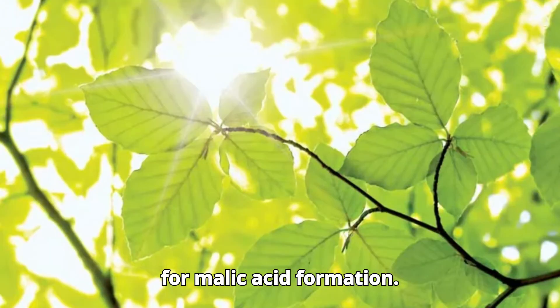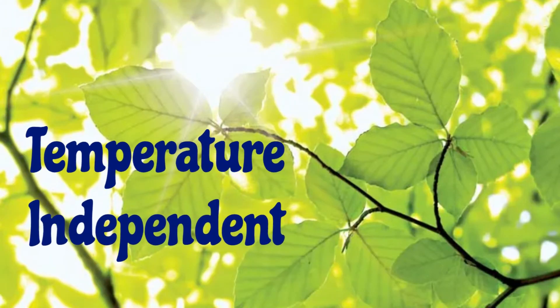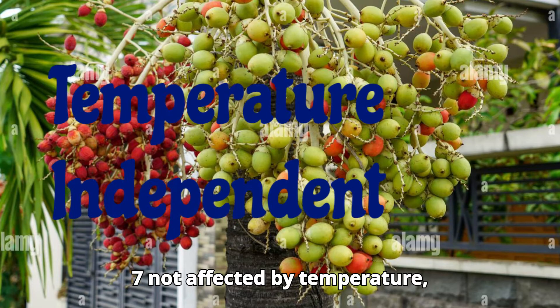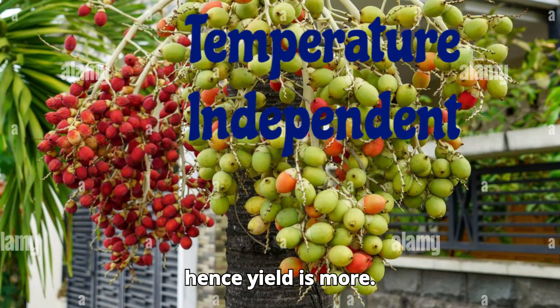Six, phosphoenolpyruvate carboxylase (PEP carboxylase), an enzyme present in all living plant cells, is responsible for malic acid formation. Seven, C4 plants are not affected by high temperature, hence their yield is more.